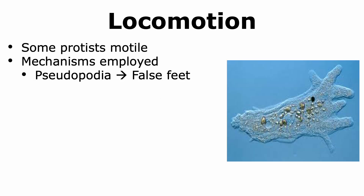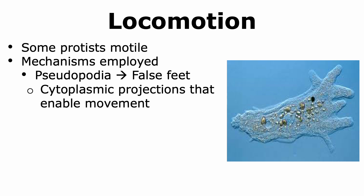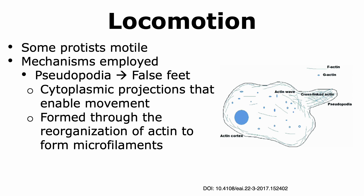In addition to flagella and cilia, some protists can use pseudopodia for moving around. Pseudopodia translates to false feet. Pseudopodia are essentially cytoplasmic projections that aid the protists in moving around. Pseudopodia are usually formed through the reorganization of actin, which is another type of cytoskeletal protein. The actin reorganizes to form microfilaments, and these microfilaments then allow the formation of pseudopodia in different parts of the cell.